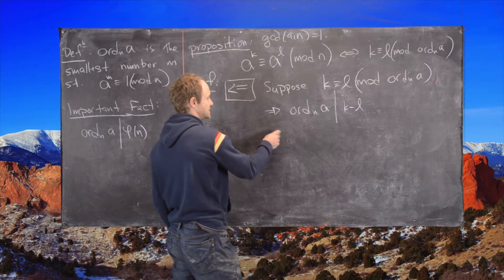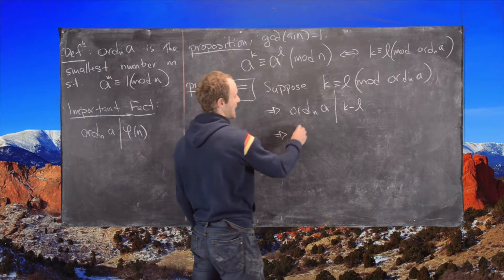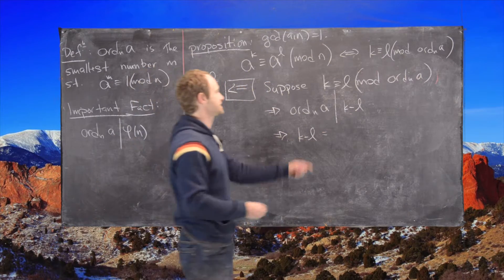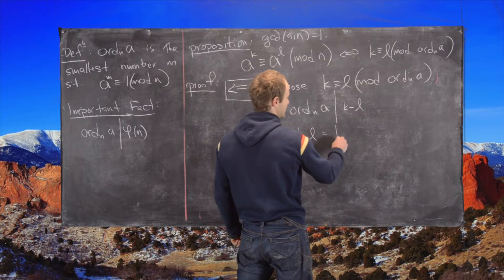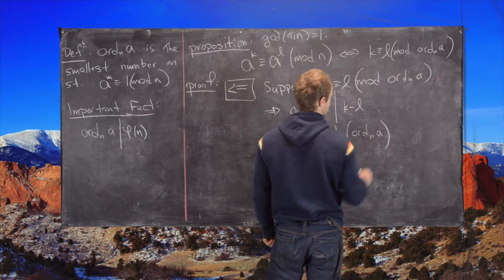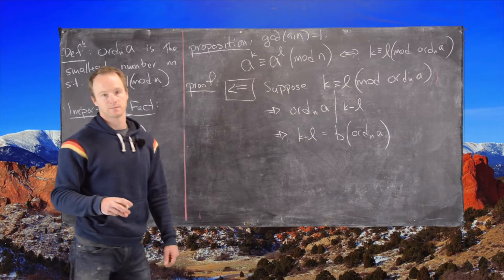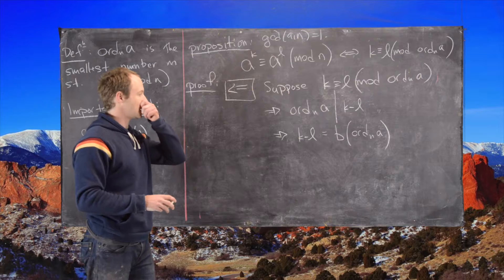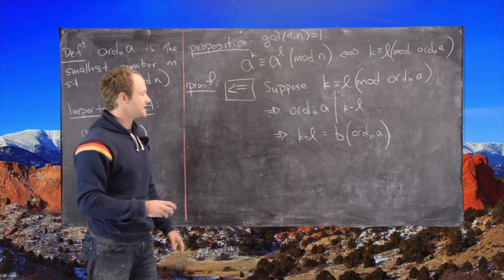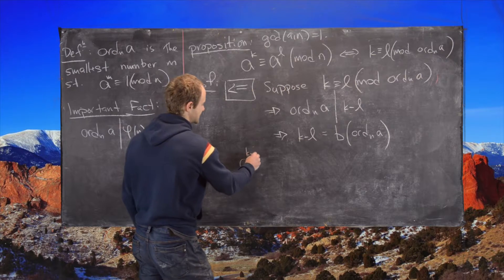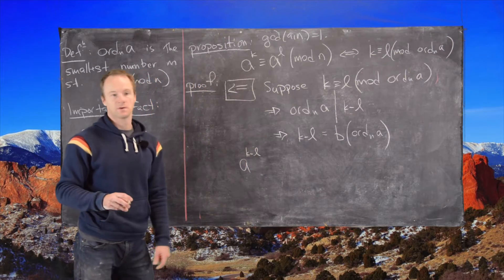But that tells us that k minus l can be written as some sort of number b times the order of n modulo a. Okay, great. And then the next thing we want to do is raise a to the k minus l. Great.